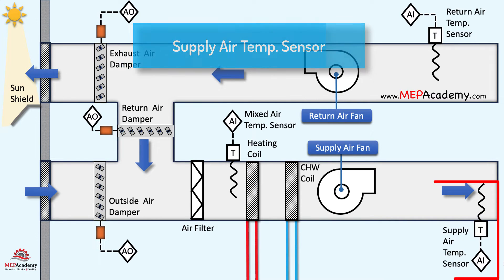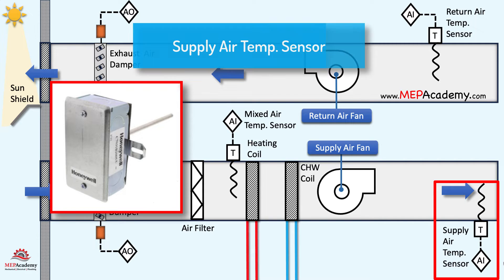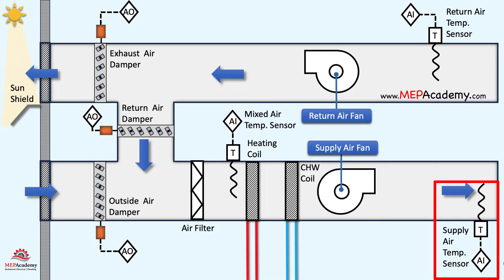The primary function of the supply air temperature sensor is to continuously monitor the temperature of the air being discharged from the air handler. This sensor provides real-time feedback on the actual temperature of the conditioned air.